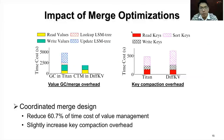We further studied the impact of our merge optimizations by measuring the time consumption of key compaction, value merge, and garbage collection separately, then combining them for comparison. We can see that our coordinated merge design helps reduce 60% of the time cost of value management, while only slightly increasing the overhead of key compaction.